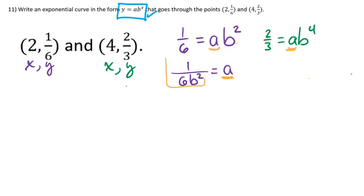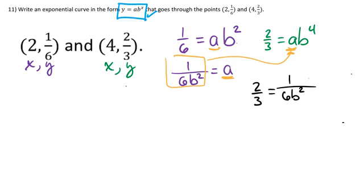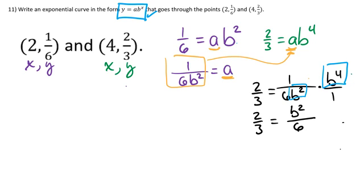Now I take that expression for a and substitute it into the second equation. I get: 2/3 equals (1 over 6B squared) times B to the 4th. I can write B to the 4th over B squared, which simplifies to just B squared. So I have B squared over 6 on the right-hand side.